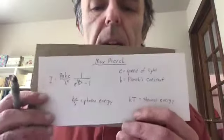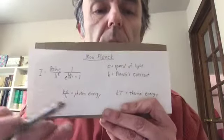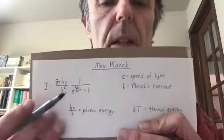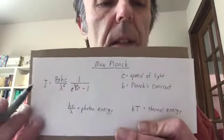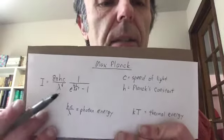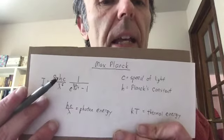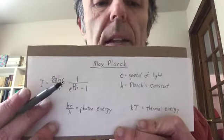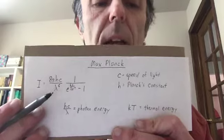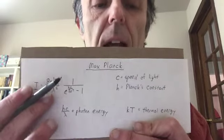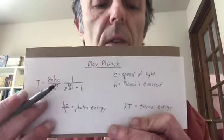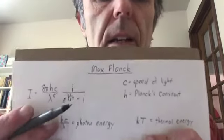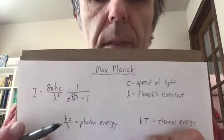Planck wanted to figure out why. In trying to figure it out, he basically derived his own formula for the intensity of blackbody radiation. This is Planck's formula. It's a bit complicated, so let's go through it. The intensity as a function of wavelength is 8πh, where h is Planck's constant, times c the speed of light, divided by wavelength to the fifth power, times 1 over e^(hc/λkT) minus 1.